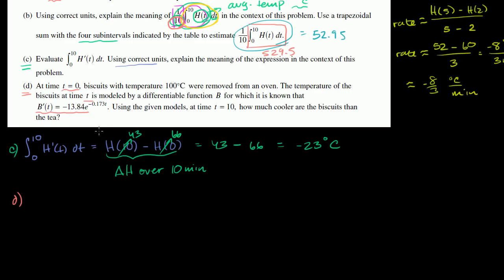We know what the temperature of the tea is, so we just have to figure out the temperature of the biscuits to determine how much cooler they are. The biscuits started off at 100 degrees Celsius, and we can ask: what was their change in temperature over the 10 minutes? If we know the change in temperature and we know they started at 100 degrees, we can find the temperature at 10 minutes. The change in temperature is just the definite integral from 0 to 10 of B prime of t dt.